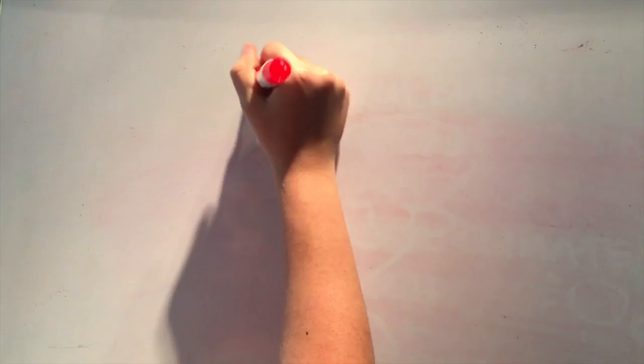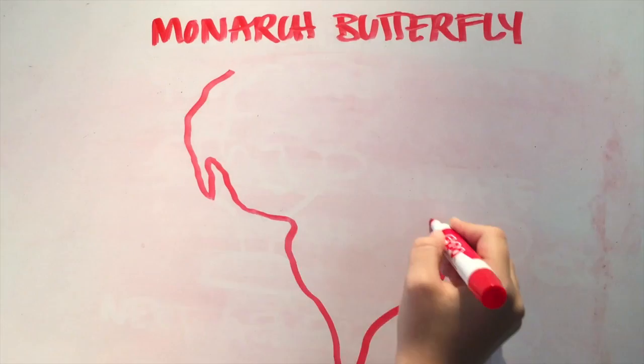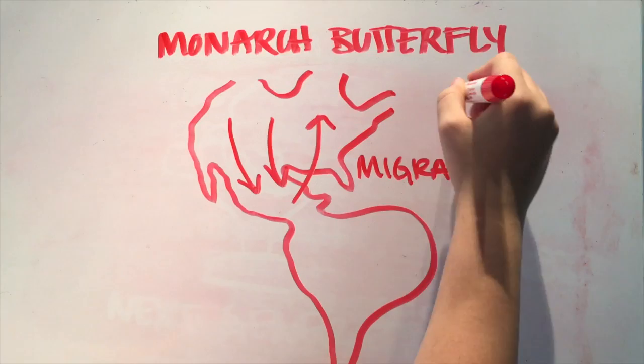Take the monarch butterfly, known for their annual migrations across North America that have been called one of the most spectacular natural phenomena in the world. They migrate from southern Canada and the United States to central Mexico, arriving in November. Then, in March,